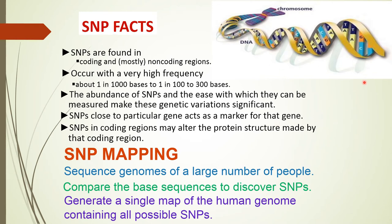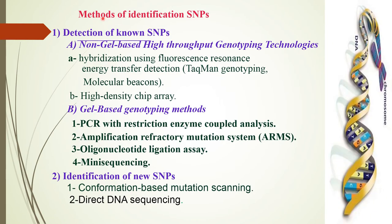Mapping of SNPs is usually done by first sequencing the genome of a large number of people, then comparing the base sequences to discover the Single Nucleotide Polymorphisms, and then generating a single map of the human genome containing all possible Single Nucleotide Polymorphisms.